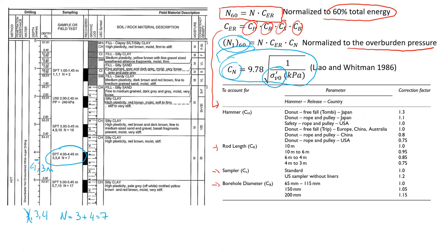So this number N that we get from the test of seven, now let's go ahead and normalize it. First, we will normalize it against the energy, and we're going to find this correction factor. Let's assume that we use a hammer which is a free fall donut type. We're going to get the correction factor of 1.3.